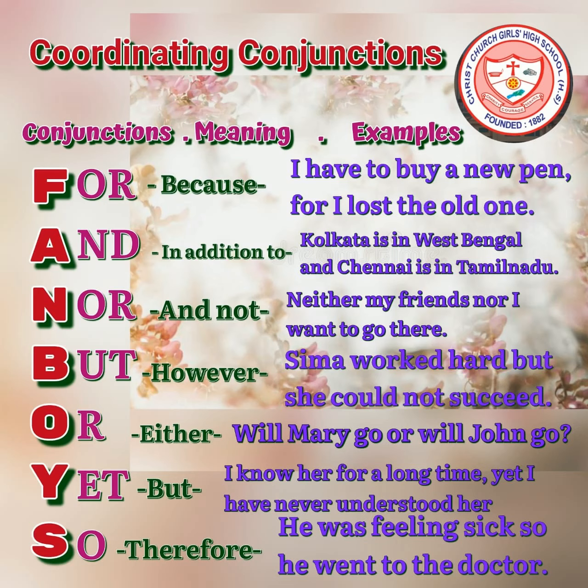Next, 'nor,' meaning 'and not.' We use the conjunction 'nor' to join two alternative clauses when the first clause uses a negative such as 'neither' or 'never,' in cases where both clauses are untrue or do not happen. For example: 'Neither my friends nor I want to go there.'